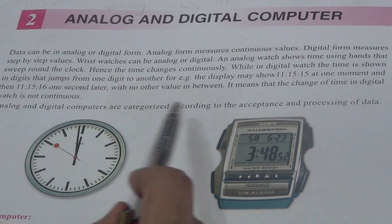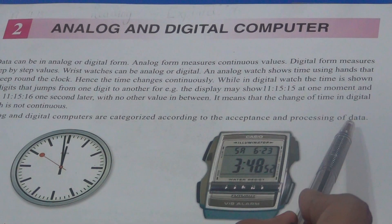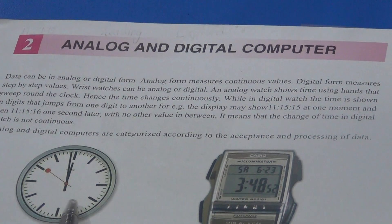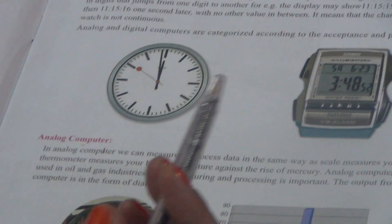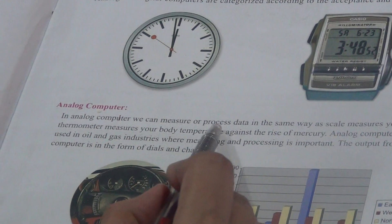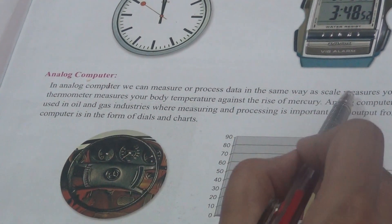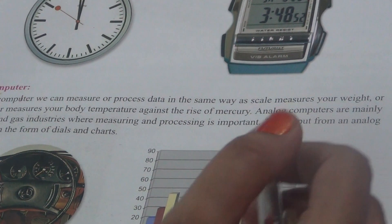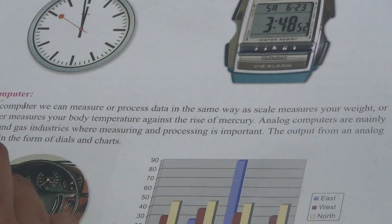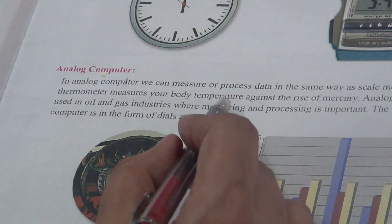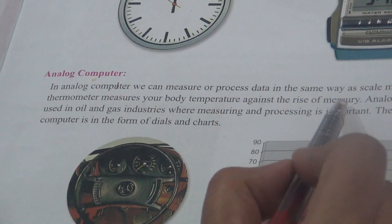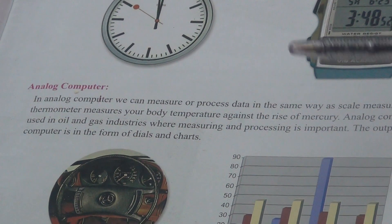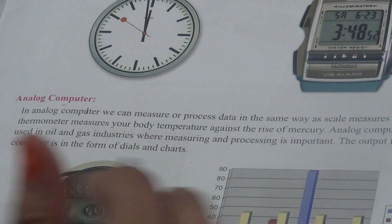Analog and digital computers are categorized according to the acceptance and processing of data. In dono mein difference isliye kiya gaya hai kyunki data ko accept karna aur uski processing karna dono mein bilkul different hai. In an Analog computer, we can measure or process data in the same way as a scale measures your weight, aur thermometer measures your body temperature. Against the rise of mercury — jo mercury andar ek para diya hota hai jo upar aata hai temperature mein — usi tarhan hume body temperature maloom hoti hai.